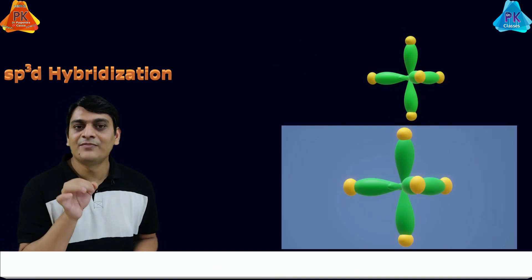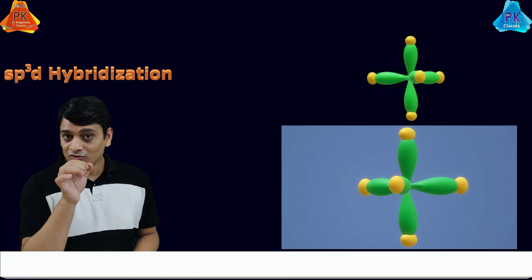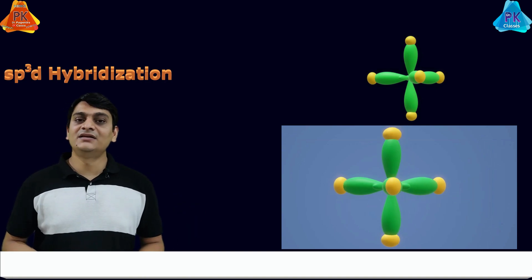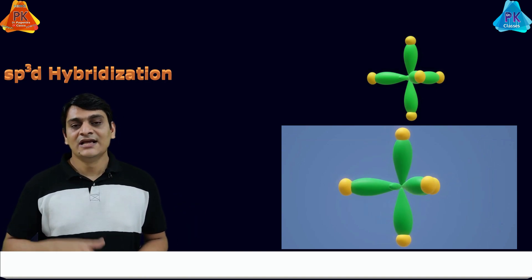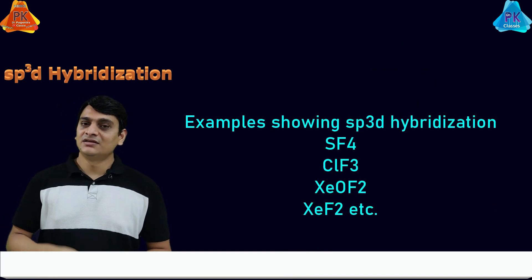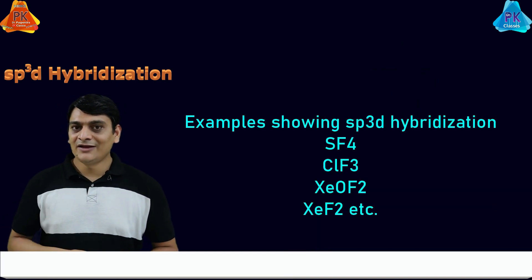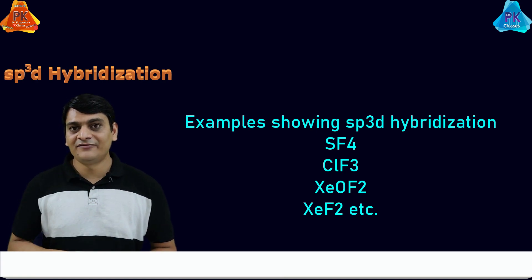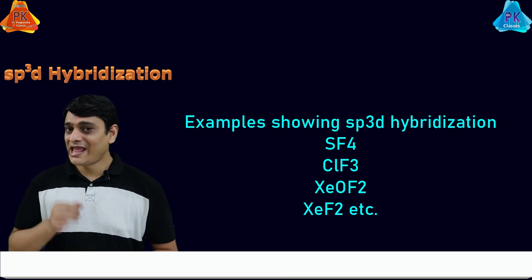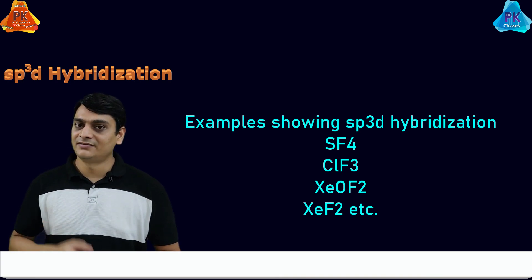With these five orbitals of phosphorus, chlorine atoms are attached by overlapping and they form five sigma bonds, as visible here. Other examples showing sp3d hybridization are SF4, ClF3, XeOF2, XeF2, etc.